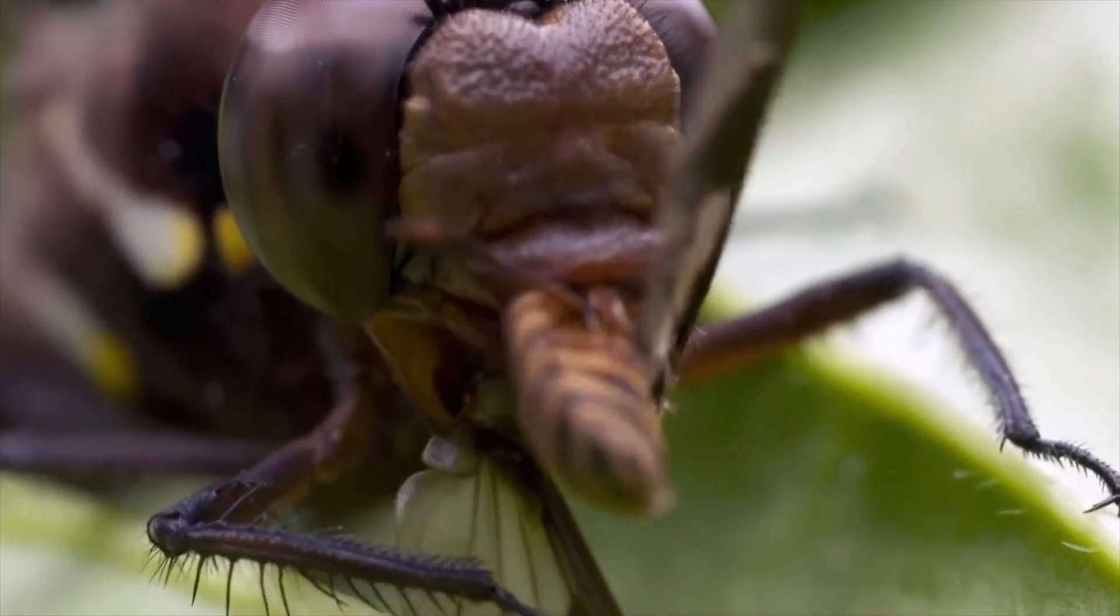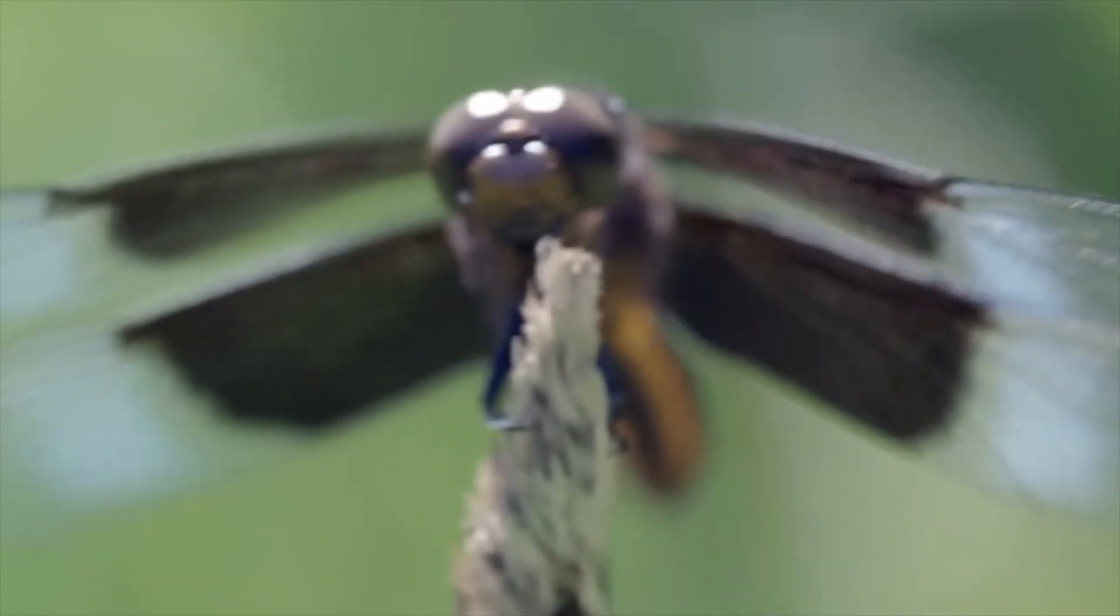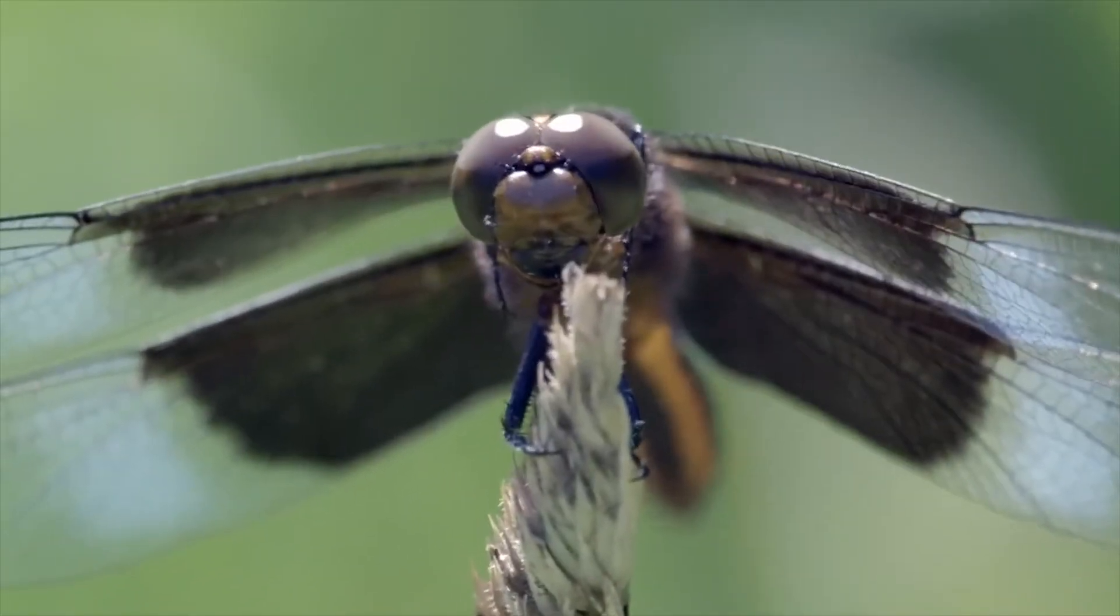So imagine if all 8,000 species of dung beetle, plus other dew-dining insects like flies, vanished worldwide. The land would be knee-deep in, you know. Farmland, forest, and desert would all collapse.